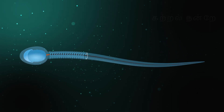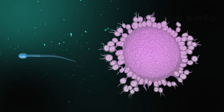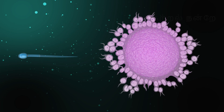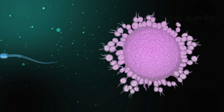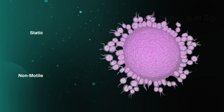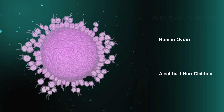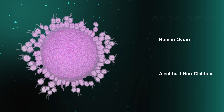Unlike the sperm cells, which have structures for movement, the ovum lacks such organelles. Therefore, it is described as static or non-motile. The human ovum belongs to the alecithal and non-cleidoic type of eggs.